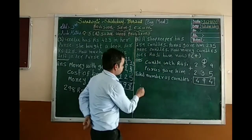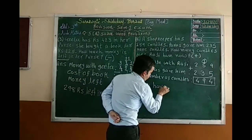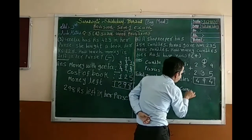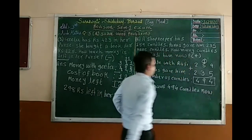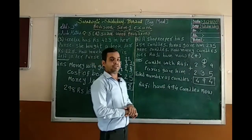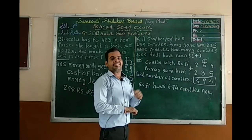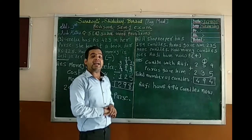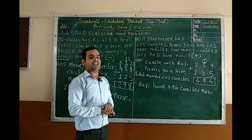How can we write the answer? We can write: Raffi has 494 candles now. So if you understood about the sixth word problem — I hope you understood these six word problems. Thank you.